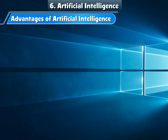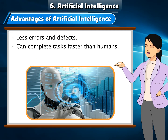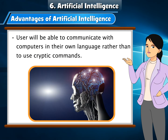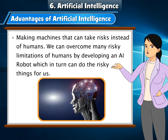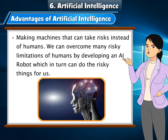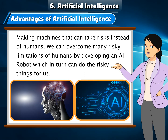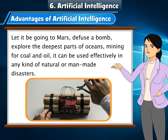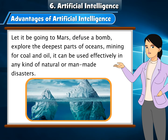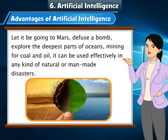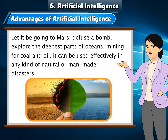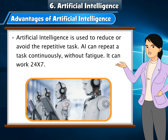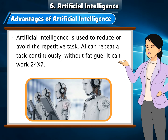Advantages of Artificial Intelligence: AI produces fewer errors and defects, and can complete tasks faster than humans. Users are able to communicate with computers in their own language rather than using cryptic commands. AI can make machines take risks instead of humans — such as going to Mars, diffusing a bomb, exploring the deepest parts of oceans, and mining for coal and oil. It can be used effectively in natural or man-made disasters. AI reduces repetitive tasks, can repeat tasks continuously without fatigue, and can work 24/7.